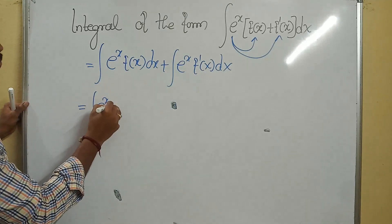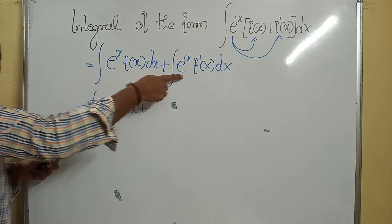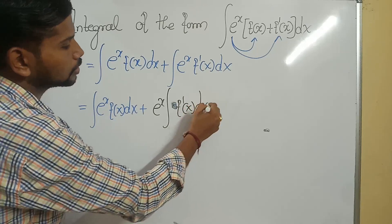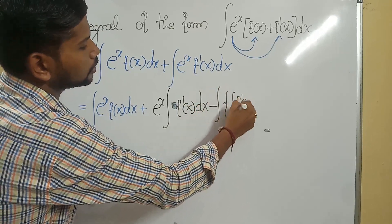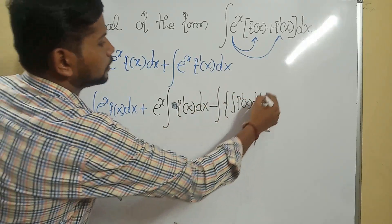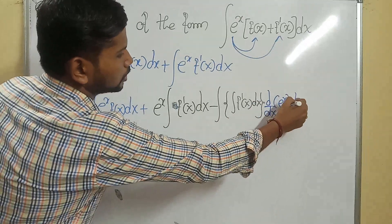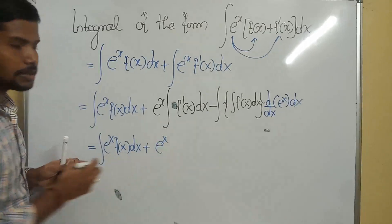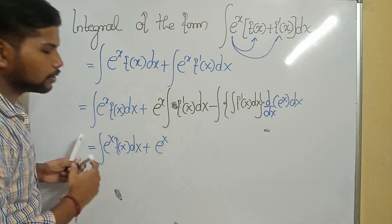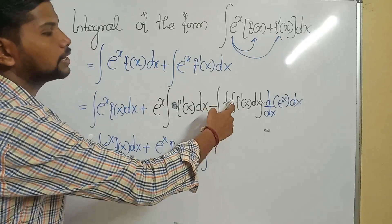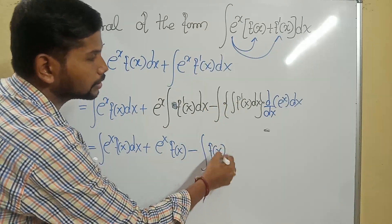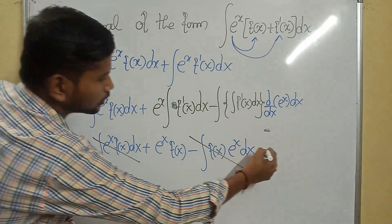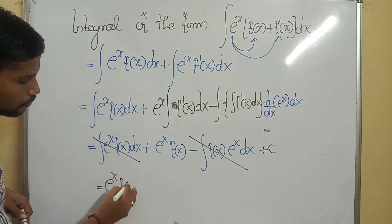The first term stays as integral of eˣ·f(x) dx. For the second term, I apply integration by parts taking eˣ as the first function: eˣ times integral of f'(x) dx, minus integral of [integral of f'(x) dx] times d/dx(eˣ) dx. Now, integral of f'(x) is f(x), and d/dx(eˣ) is eˣ. So we get integral of eˣ·f(x) dx, plus eˣ·f(x), minus integral of f(x)·eˣ dx. The two integral of eˣ·f(x) terms cancel — one positive, one negative — and the answer is eˣ·f(x) plus c.